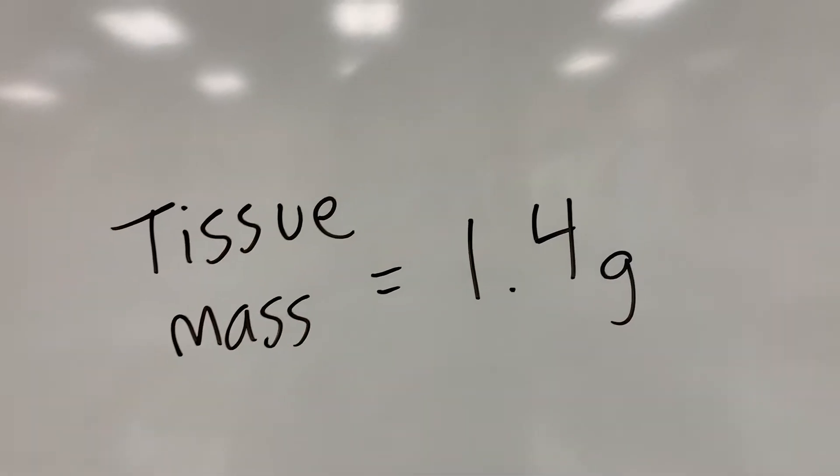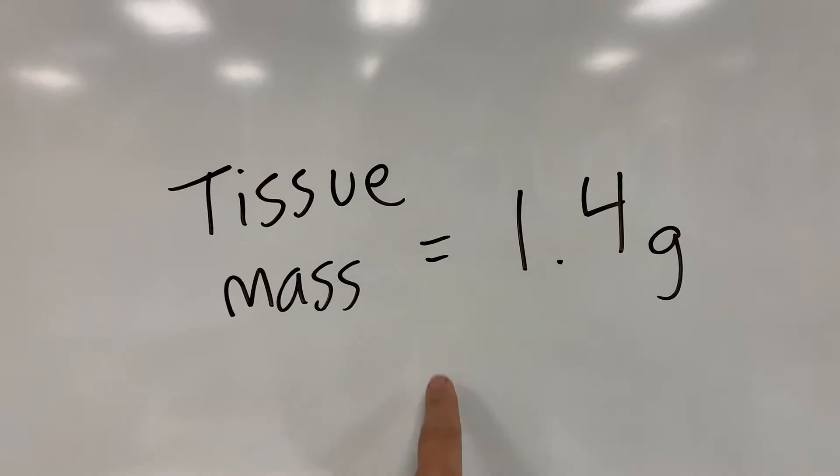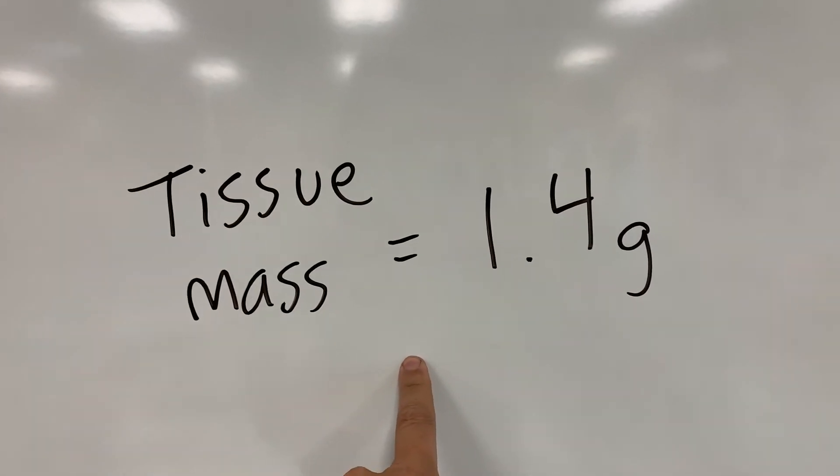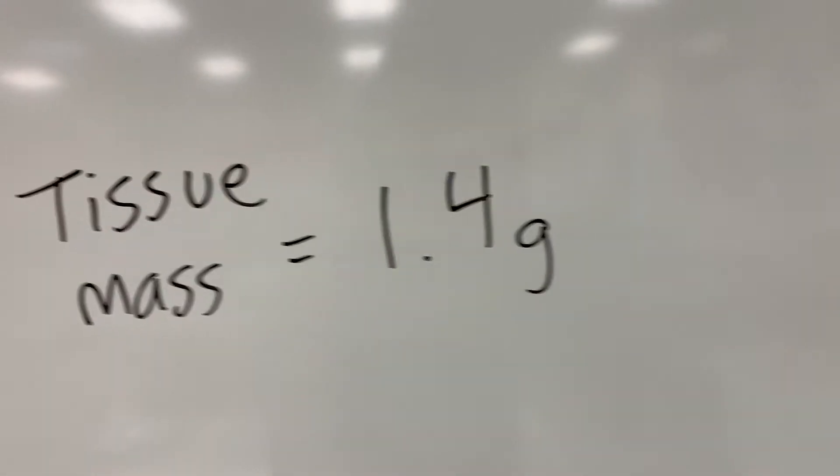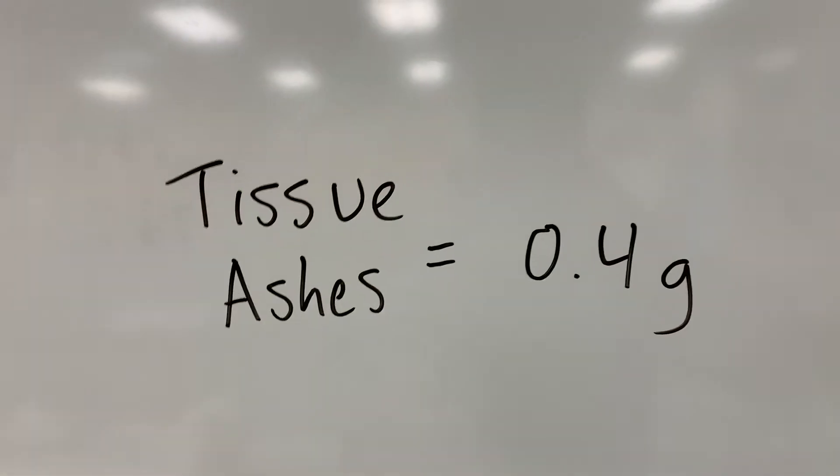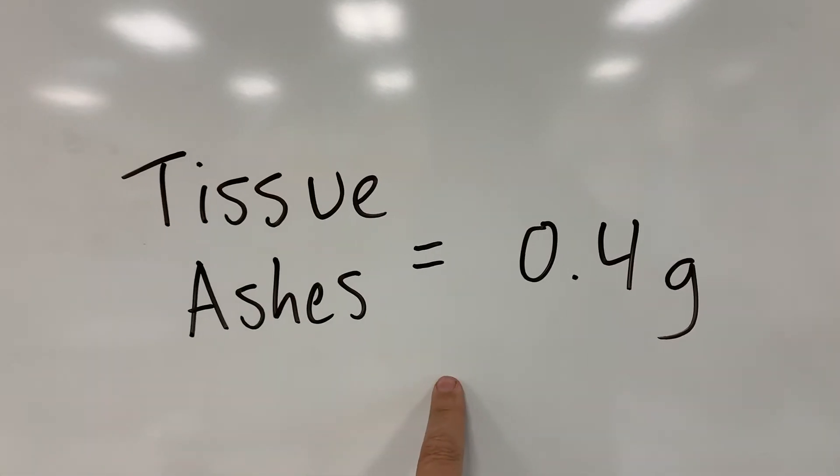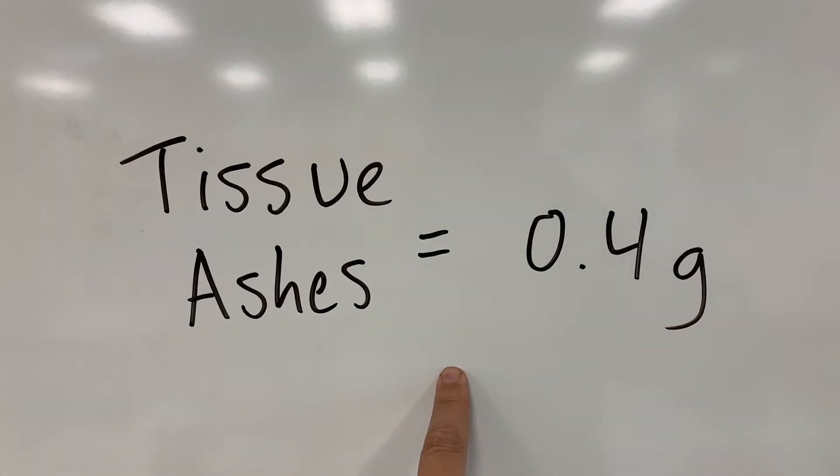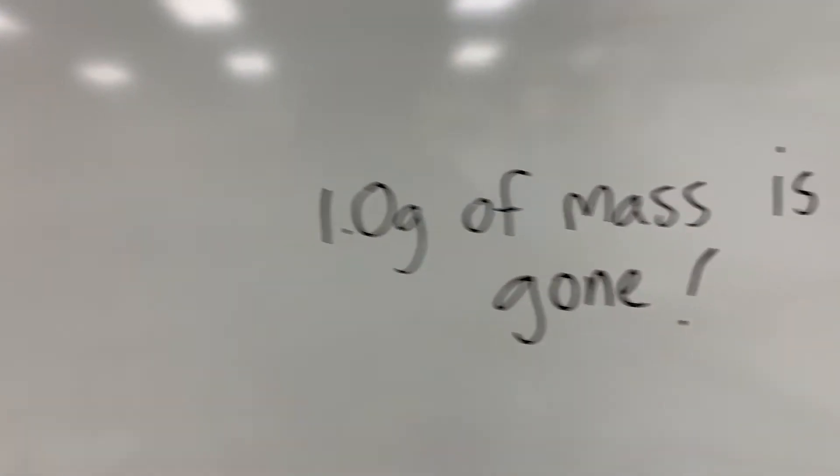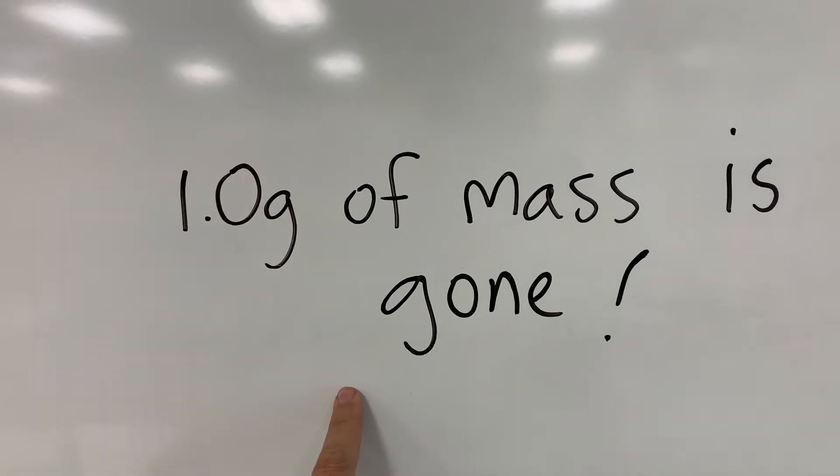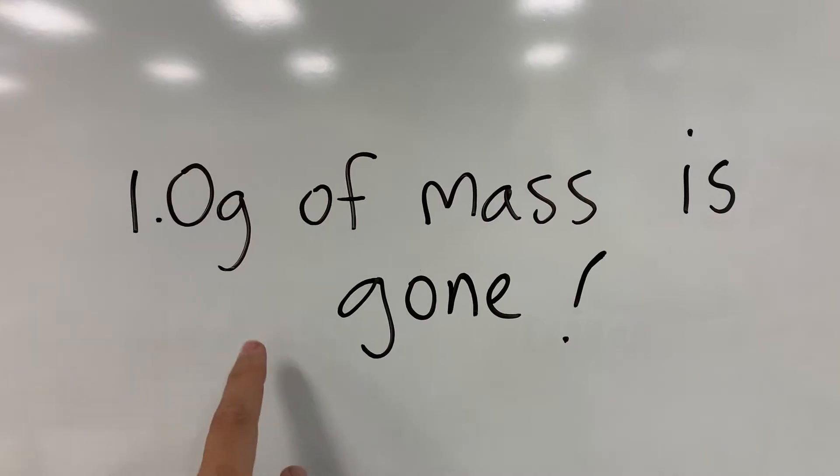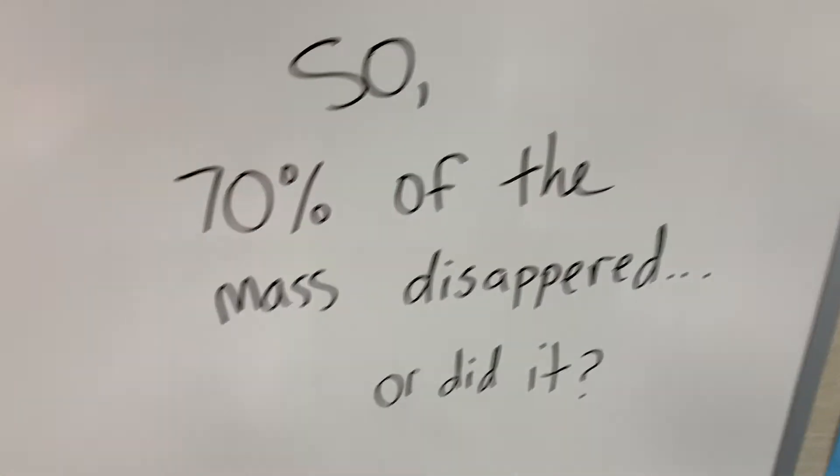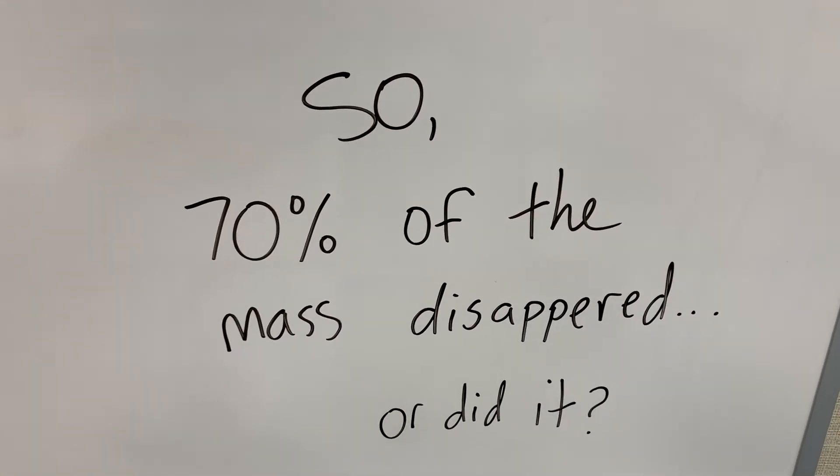I weighed the mass of one tissue and found that one tissue weighs 1.4 grams. After I weighed the ashes, I found that there were only 0.4 grams of ashes left over. Which means that 1.0 grams of mass is gone, or 70% of the mass disappeared.